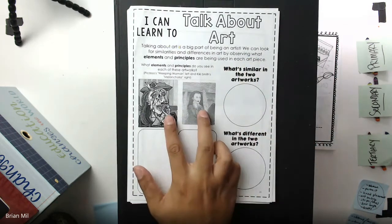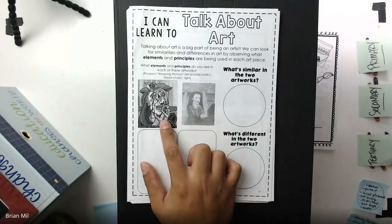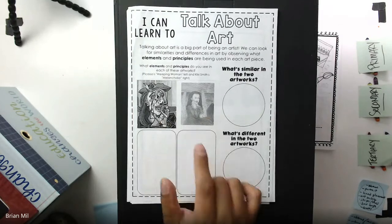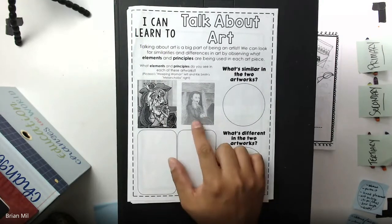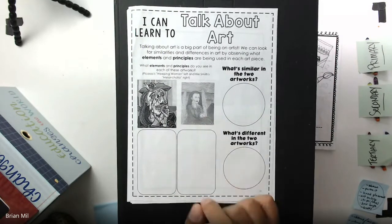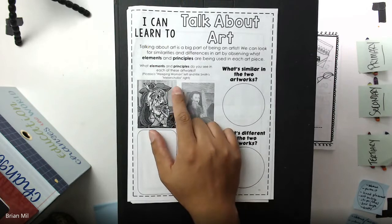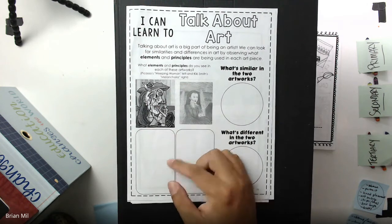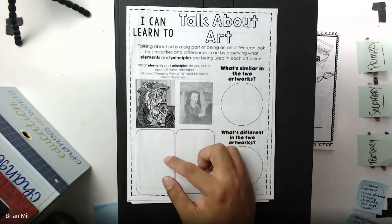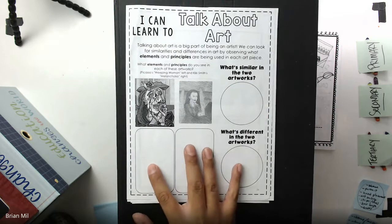If you look down below, we have two pictures here. One's by Picasso — he's an abstract artist. And another one by Kiki Smith, and she's more of a realist artist. Basically what they're asking is what elements of art and principles of design do you see in each of these artworks? We would normally write them down here, but we're going to skip that part for now.